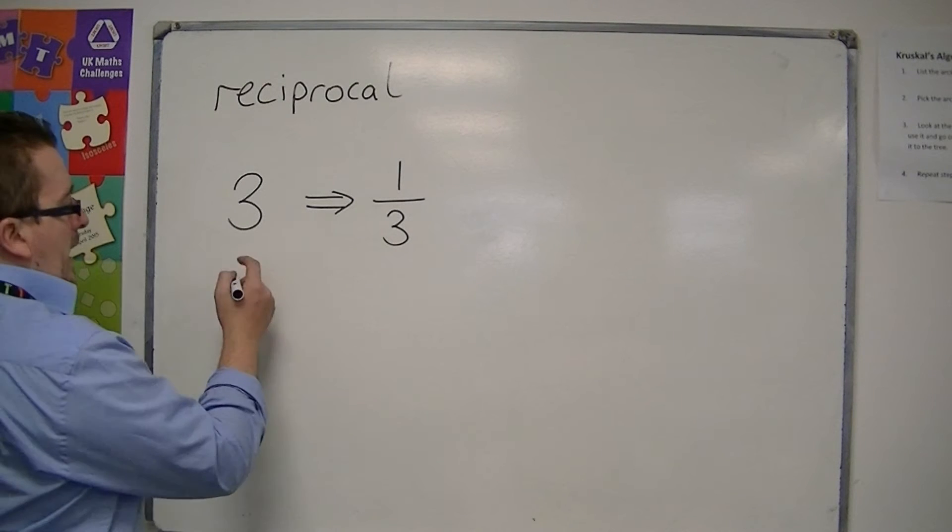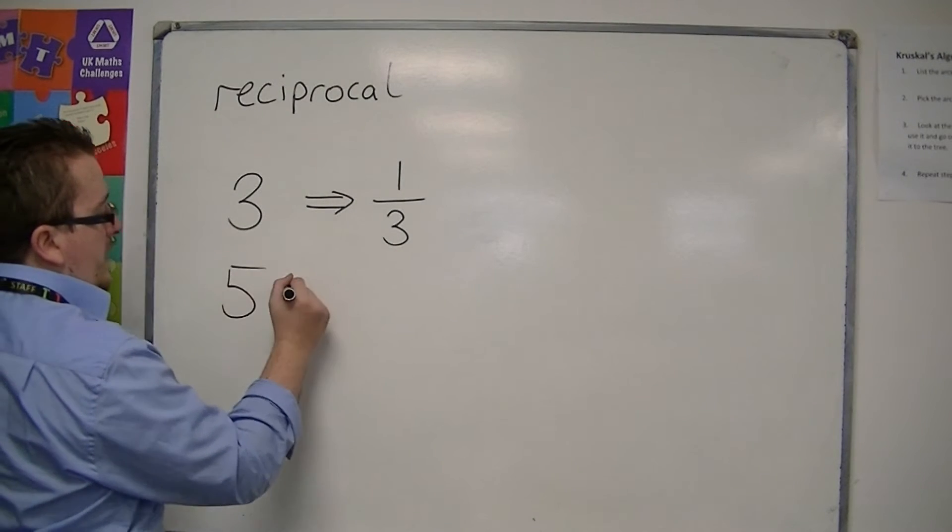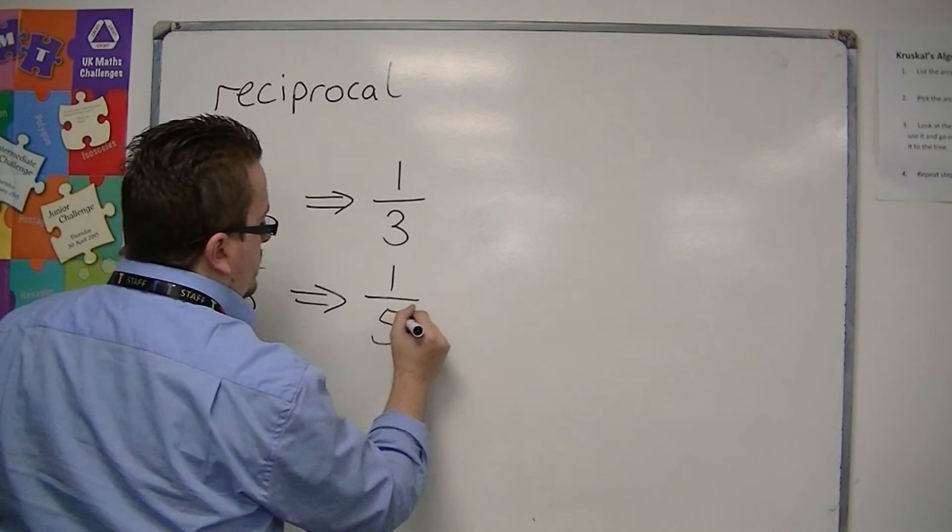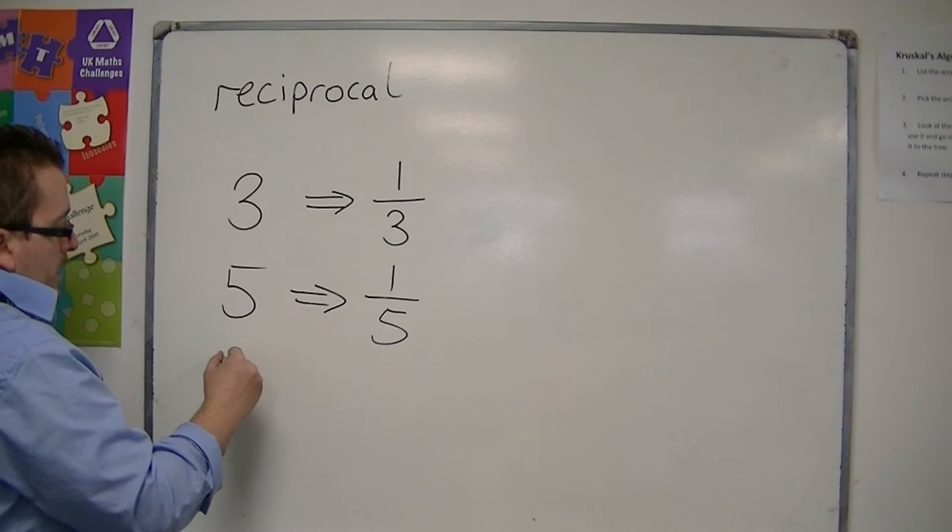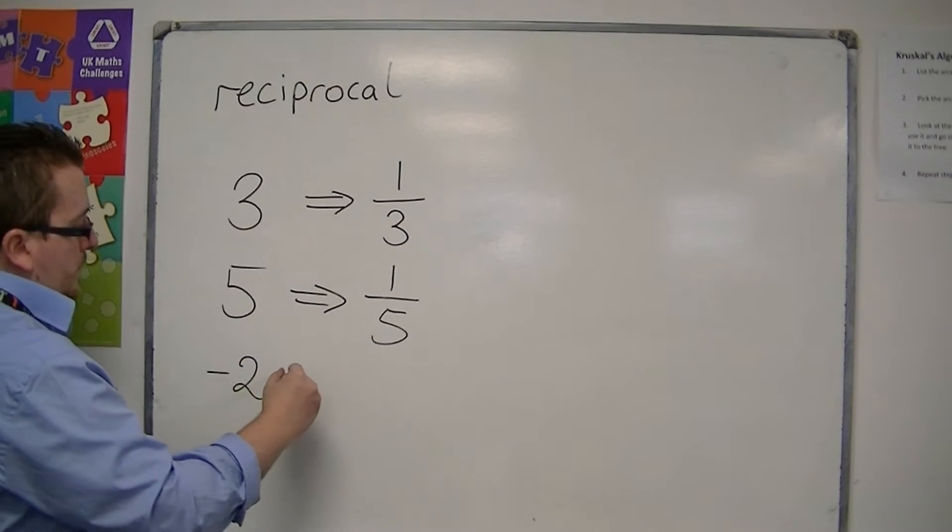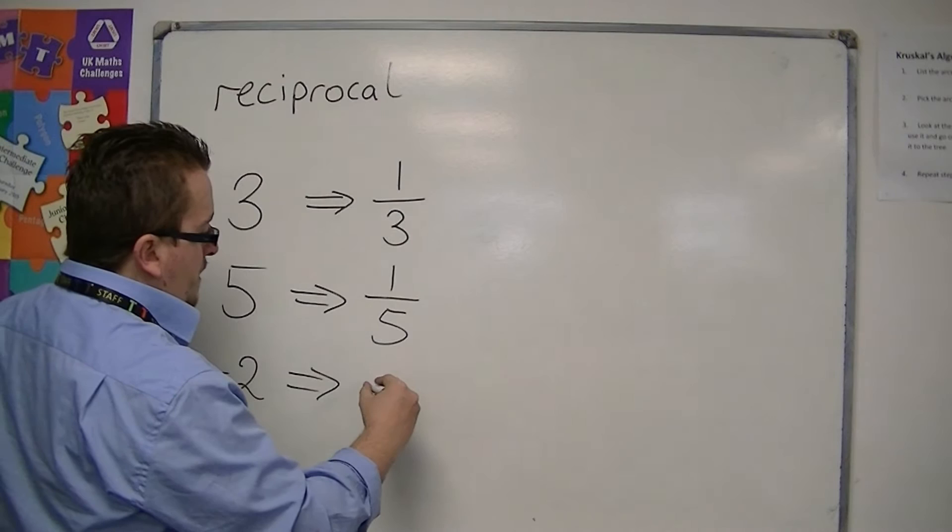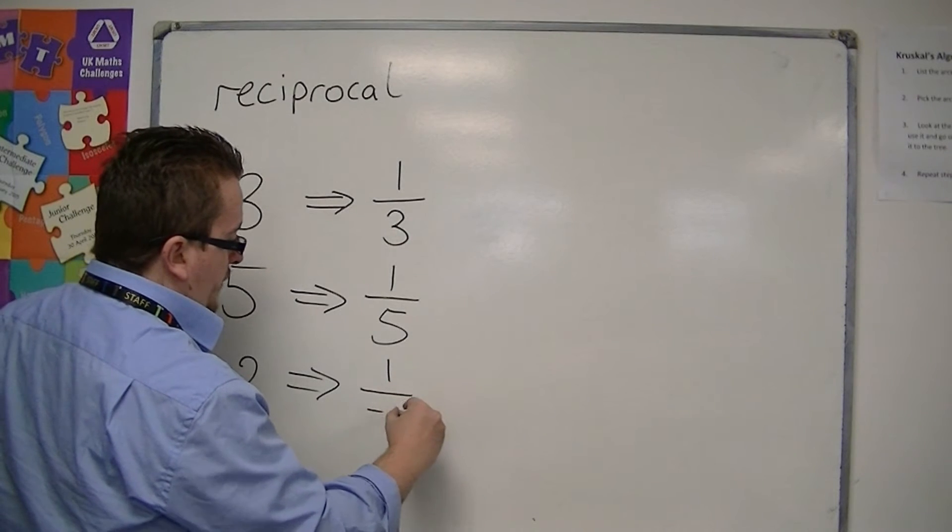If you had a number like 5, then it's 1 over 5, would be the reciprocal. If you had the number minus 2, then the reciprocal would be 1 over minus 2.